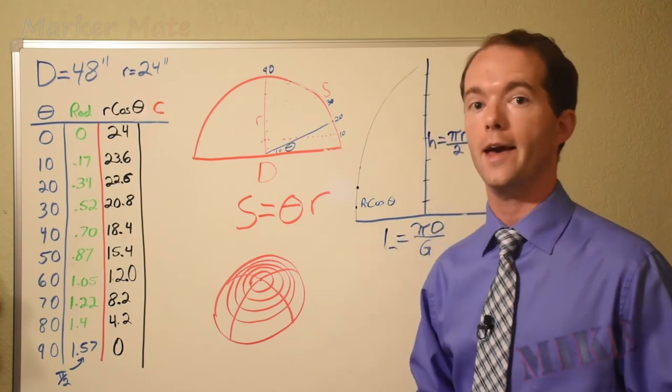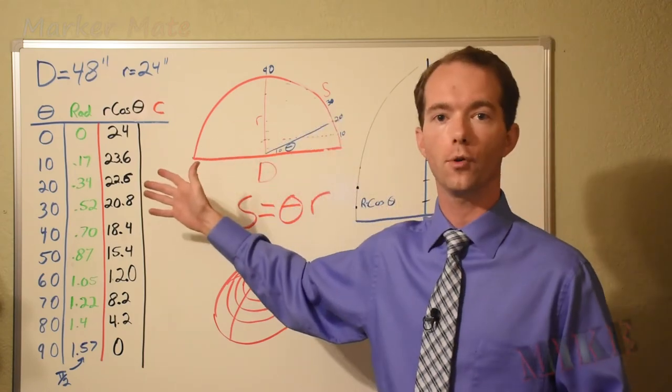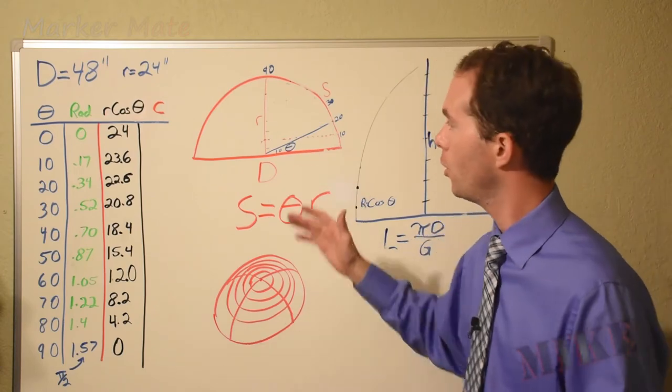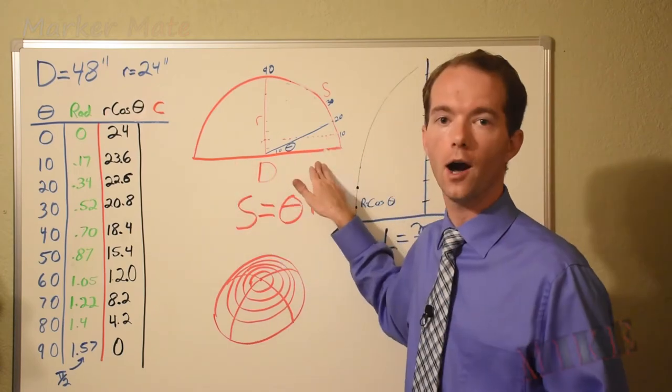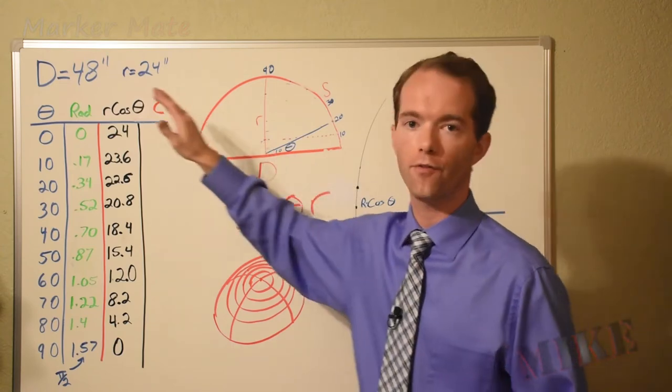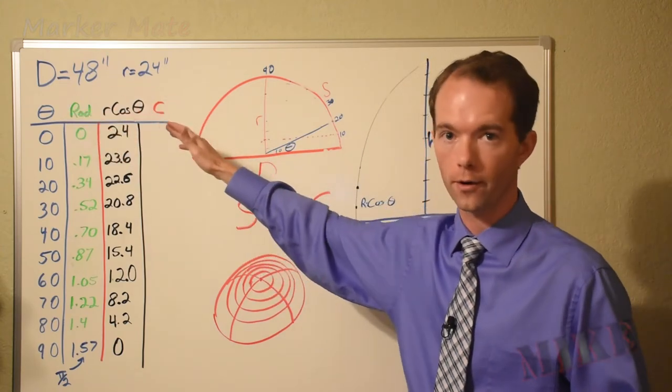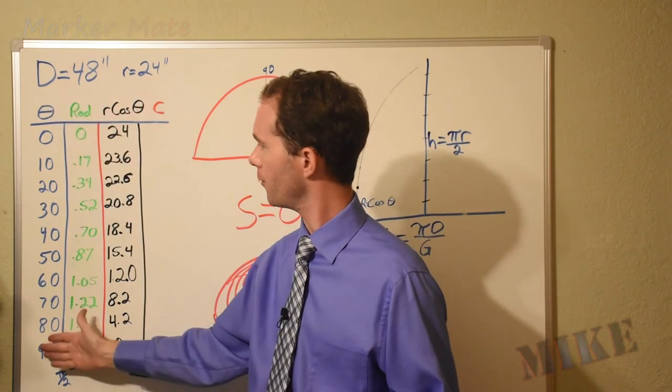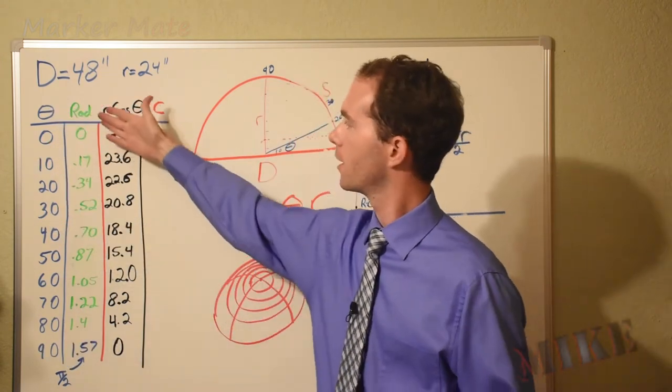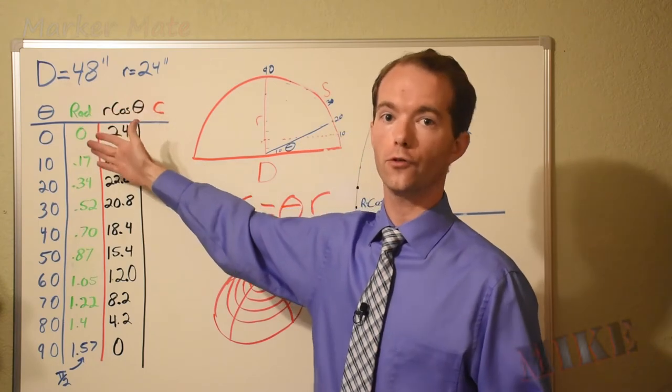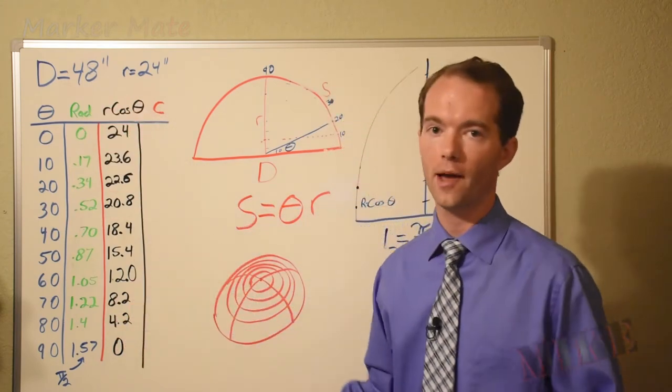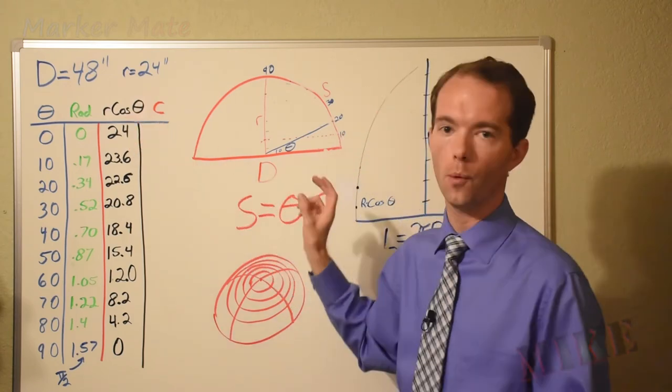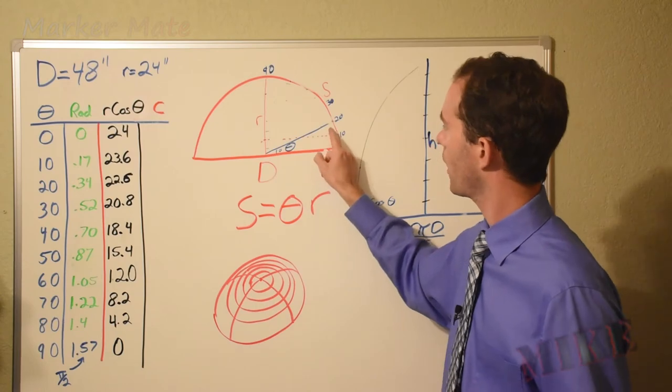Okay. So I've gone ahead and created this table over here to kind of explain all of this, because we're going to run this example now where the diameter of our hemisphere is going to be 48 inches. Therefore, the radius is 24. I've went ahead and labeled all of our thetas here in 10 degree increments. In the second column here in green, I have converted those to radians because I was doing my math here in radians.